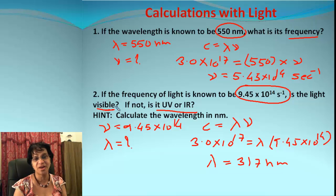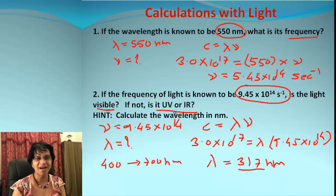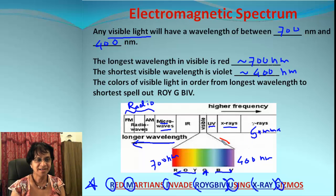Now our job is to find out is it visible or not, and if it's not visible, is it UV or IR? For a light to be visible, it must be in visible range, and visible range is between 400 to 700 nanometers. The wavelength we got is not in visible range. But if it's not visible light, is it UV or IR? The visible range is between 400 and 700, and our wavelength is 317, which comes somewhere over here. That means the light must be UV and not IR.